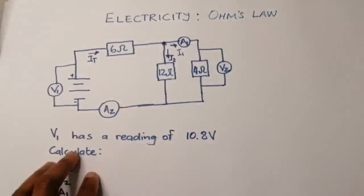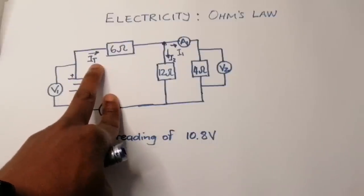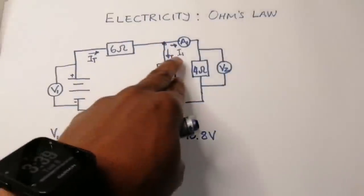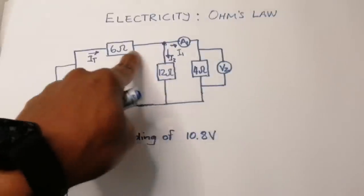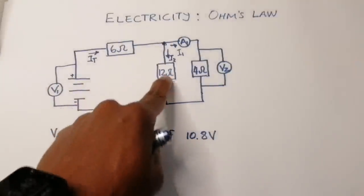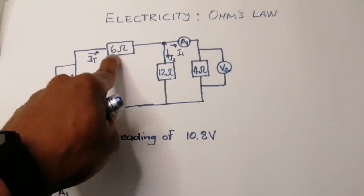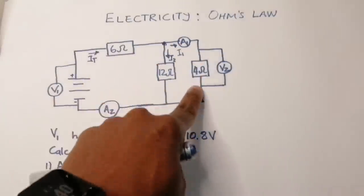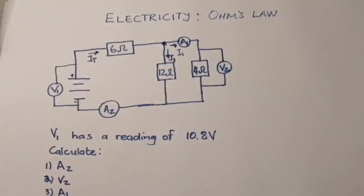Now, notice which current passes through the 6 ohm resistor — it's I total. Because the 6 ohm carries I total while the 12 ohm carries only I1, we cannot say the 6 ohm is in series with the 12 ohm, since it's not the same current through both. Similarly, we cannot say the 6 ohm is in series with the 4 ohm resistor, because again it's not the same current passing through both.